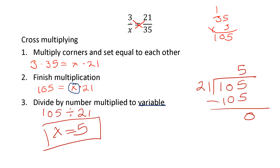The answer to your division is your missing number. So three over five equals 21 over 35. That should make sense: 3 times 7 is 21, and 5 times 7 is 35. All we have here is an equivalent fraction multiplied by 7.